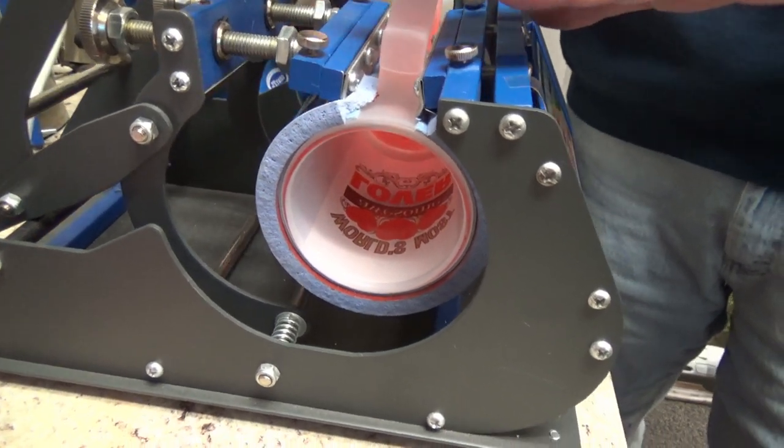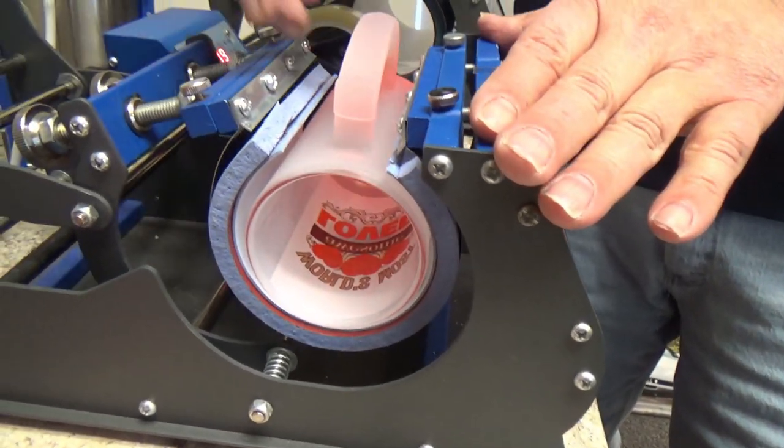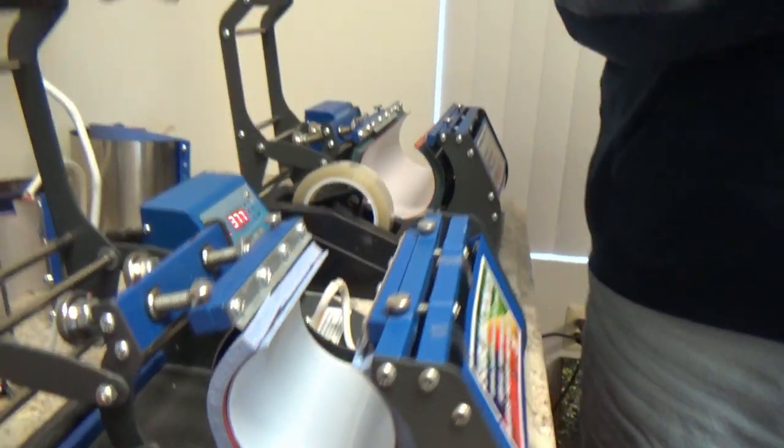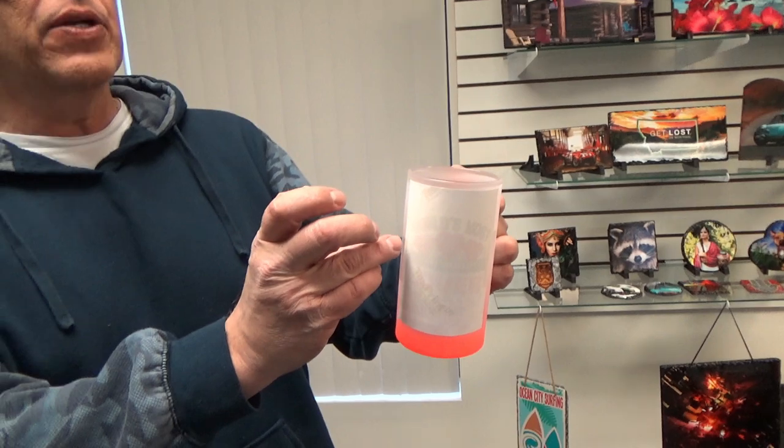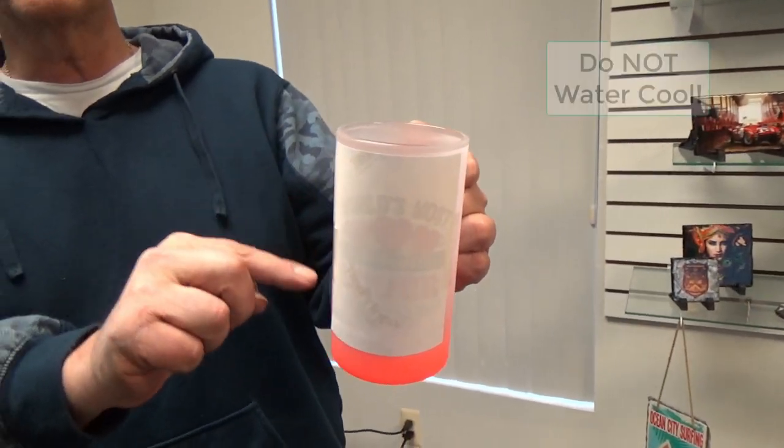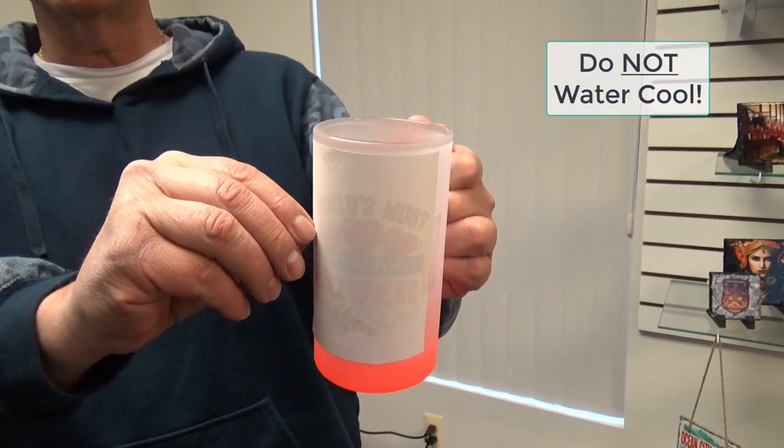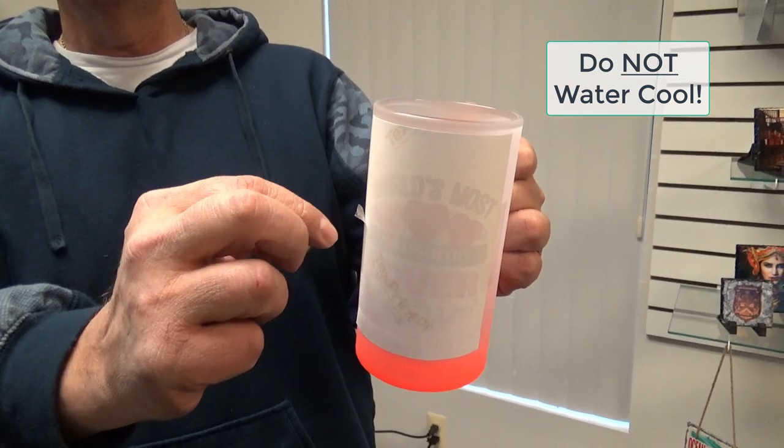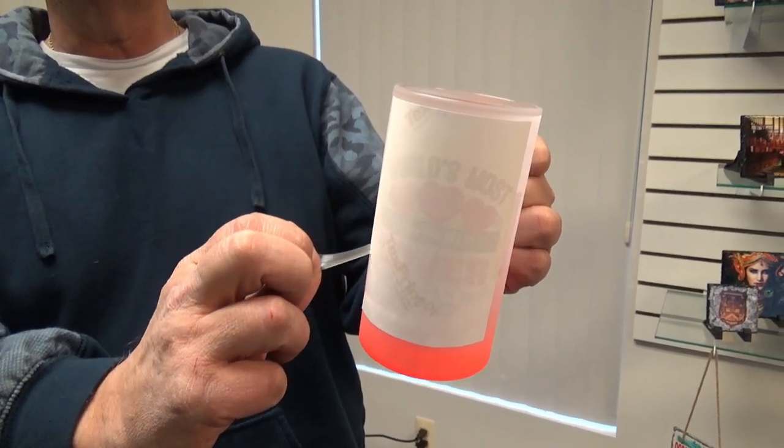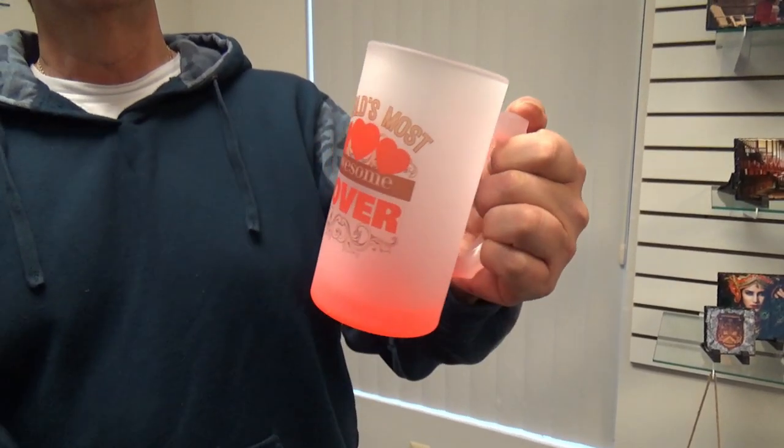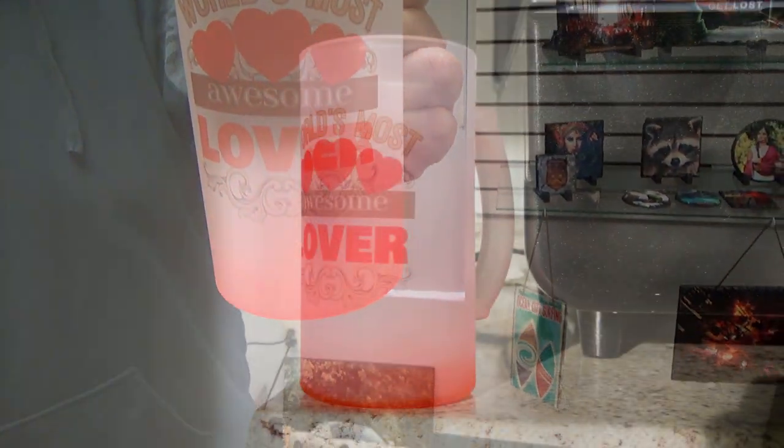You simply gonna hit the timer on your mug press, open it up. This is an air cool mug. Remember, when you're working with frosted drinkables, do not scratch the frosting. Either let it cool down to peel off, or do exactly what I'm doing by peeling it right onto the paper, revealing our beautiful brilliant image.